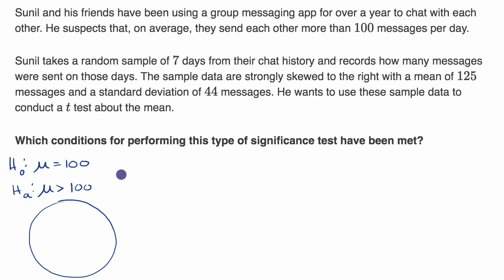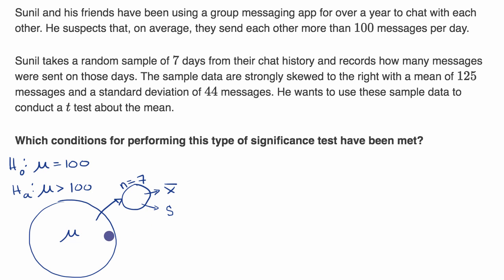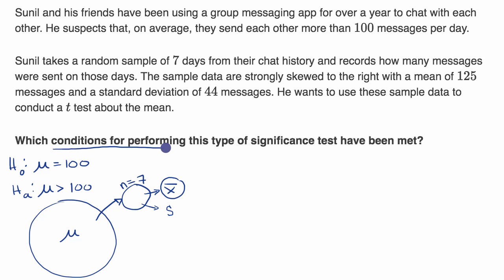What he does is he takes a sample from the population of days — there are over 365, since they've been using the group messaging app for over a year — and he takes seven of those days, so n equals seven, and from that he calculates sample statistics. He calculates the sample mean, which is trying to estimate the true population mean, and he also calculates a sample standard deviation. In a significance test, you ask: what is the probability of getting this sample mean or something even more extreme, assuming the null hypothesis? If that probability is below a preset threshold, you reject the null hypothesis, and it would suggest the alternative. But in order to feel good about that significance test and be able to calculate that p-value with confidence, there are conditions for performing this type of significance test.